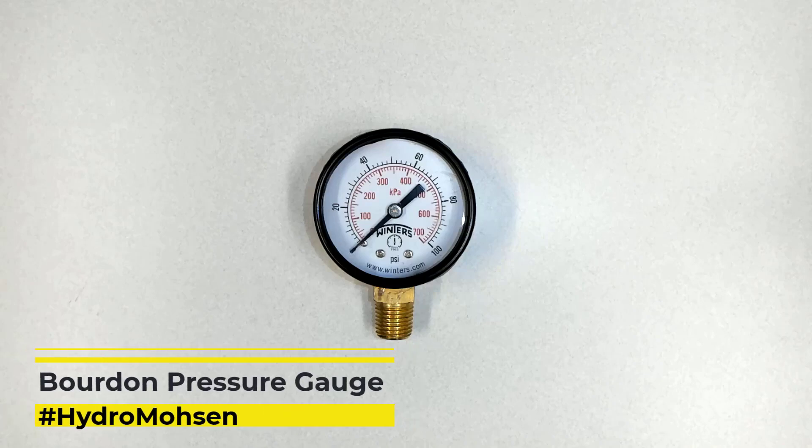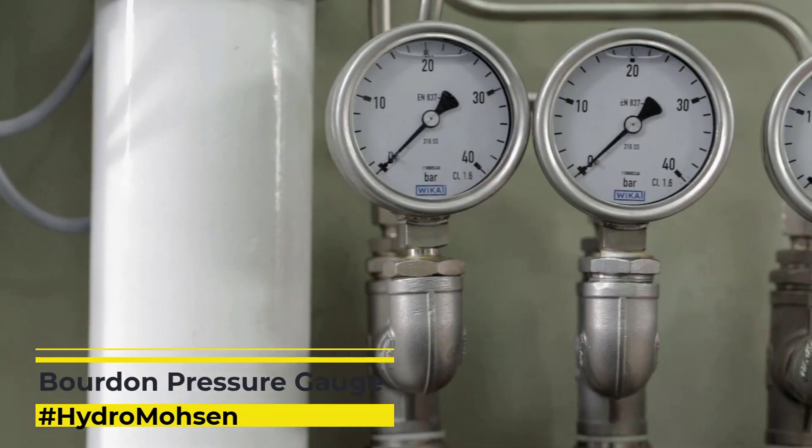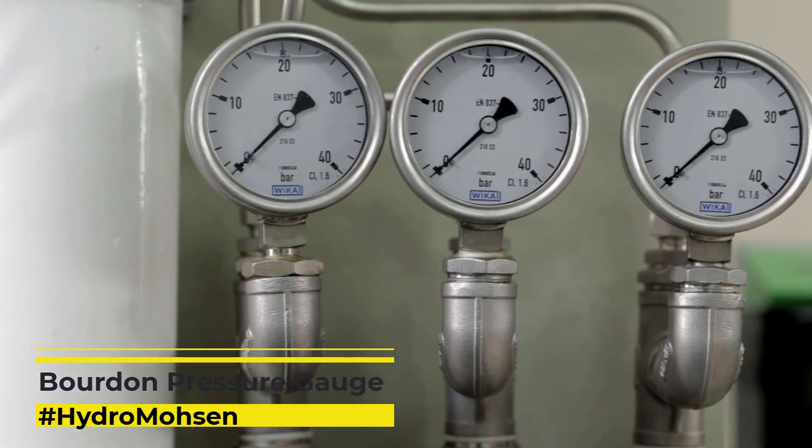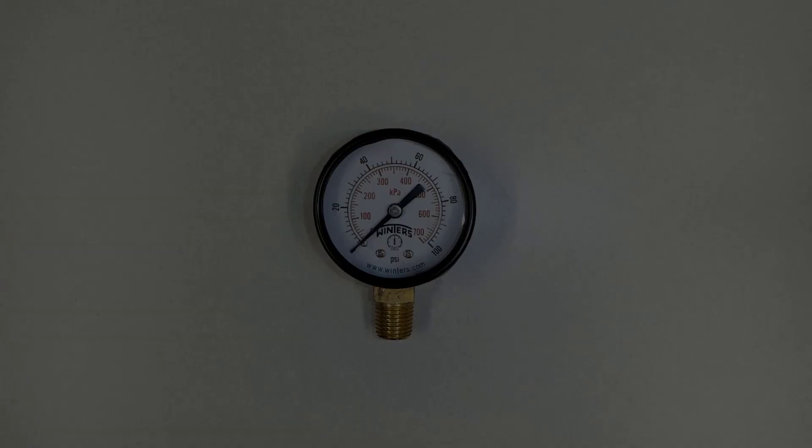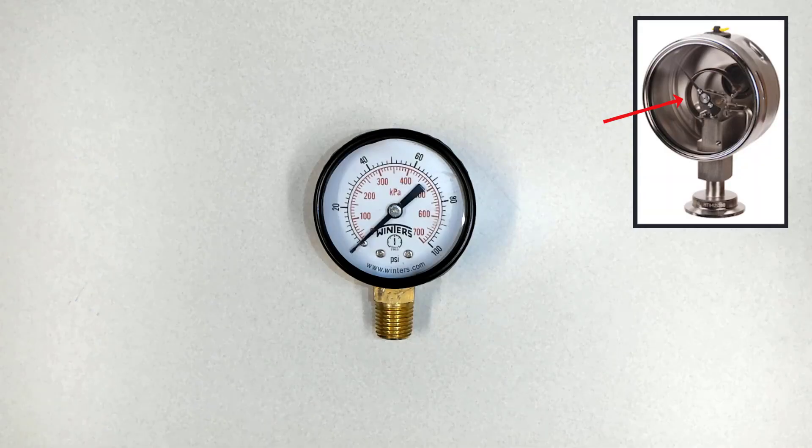In this short video, I'm going to talk about Bourdon Gauge. Bourdon Gauge is a specific type of pressure gauge that allows you to measure pressure using a curved tube.